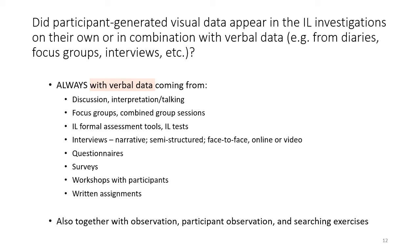Surprisingly, participant-generated visual data never appeared in information literacy investigation on their own — they always appeared in combination with verbal data. These verbal data came from discussion, interpretation or talking, then interviews, narratives, semi-structured face-to-face, online or video formats, then questionnaires or surveys, information literacy assessment tools or tests, focus groups or combined group sessions, workshops with participants, or even written assignments. They also came together with observation, participant observation, and searching exercises.